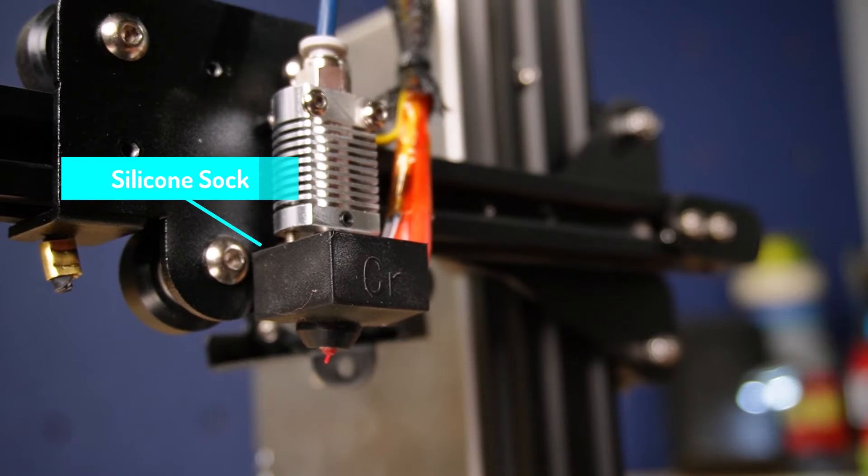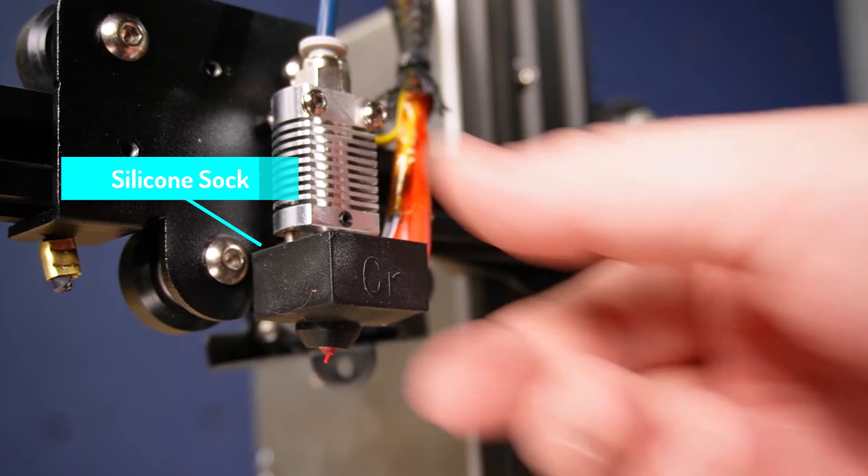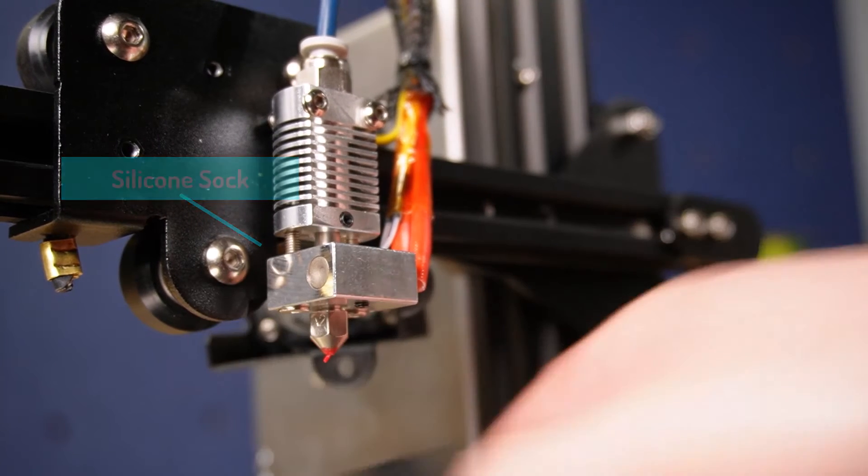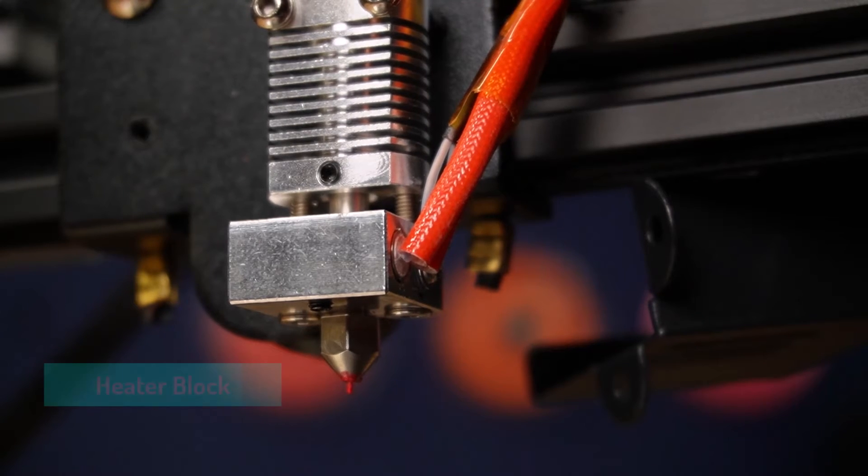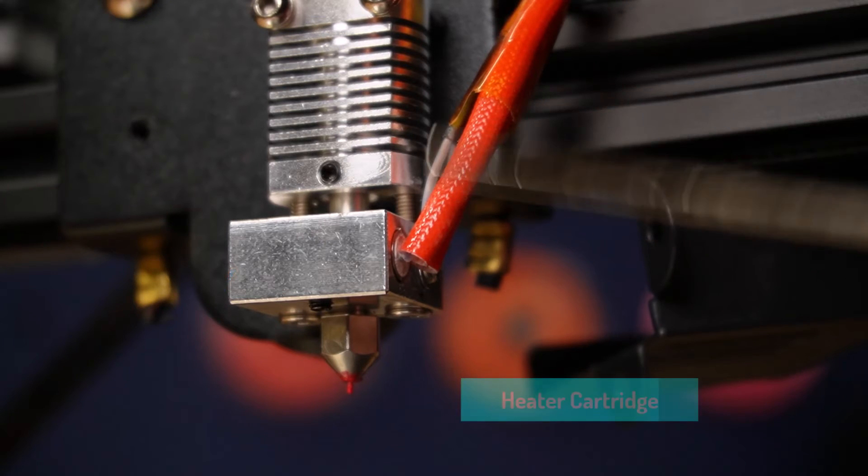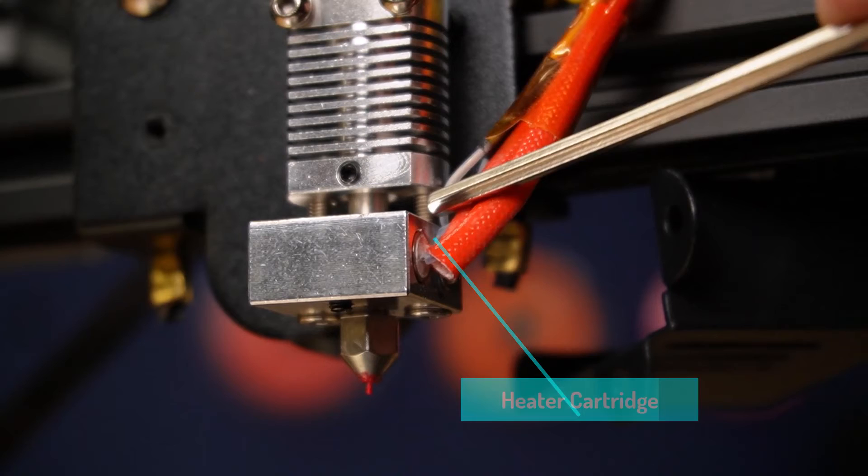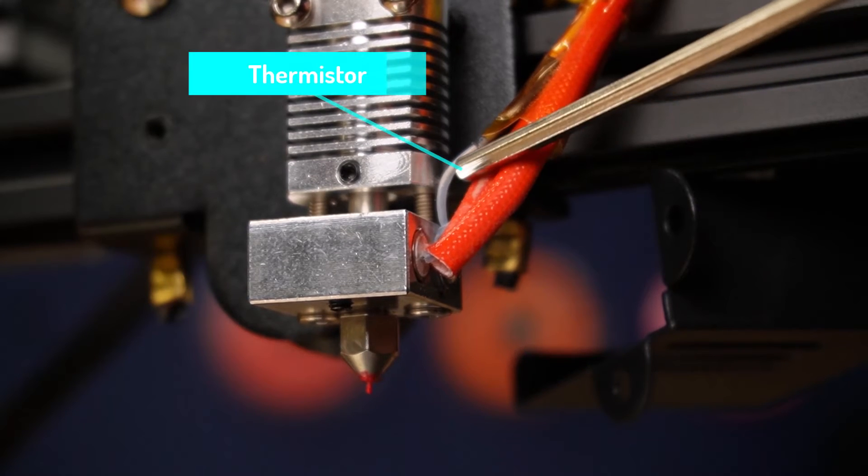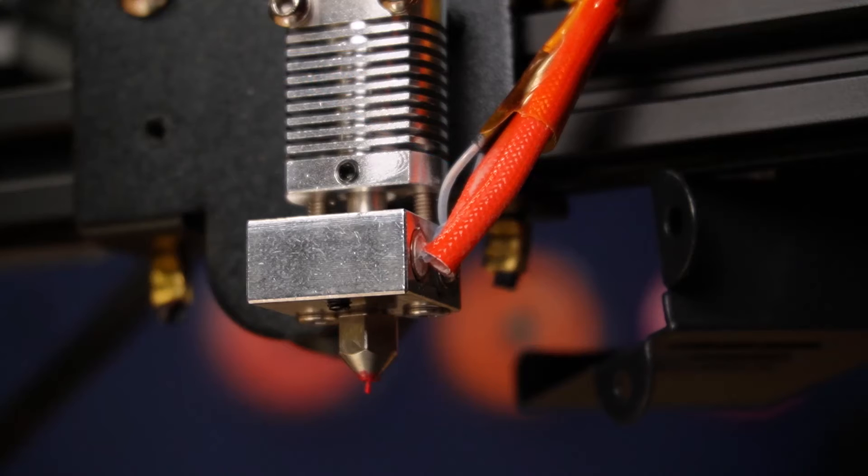Looking down here, you'll see a silicon sock that is meant for insulating the heater block. It makes it more efficient and also adds a bit of protection. Once we take this off, we can get a better look at the heater block and see a few wires making their way into it. The larger set is for the heater cartridge, which is what ultimately heats up and cools down the heater block. The second set of wires goes into the thermistor, which acts as a thermostat for the heater block, helping the heater cartridge heat up and cool down to keep a consistent temperature for melting the filament.